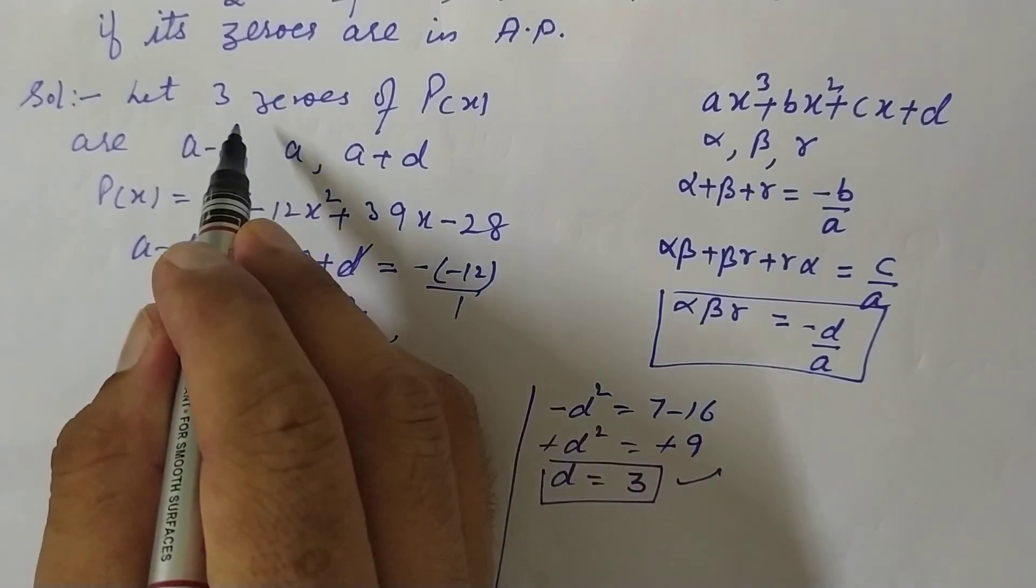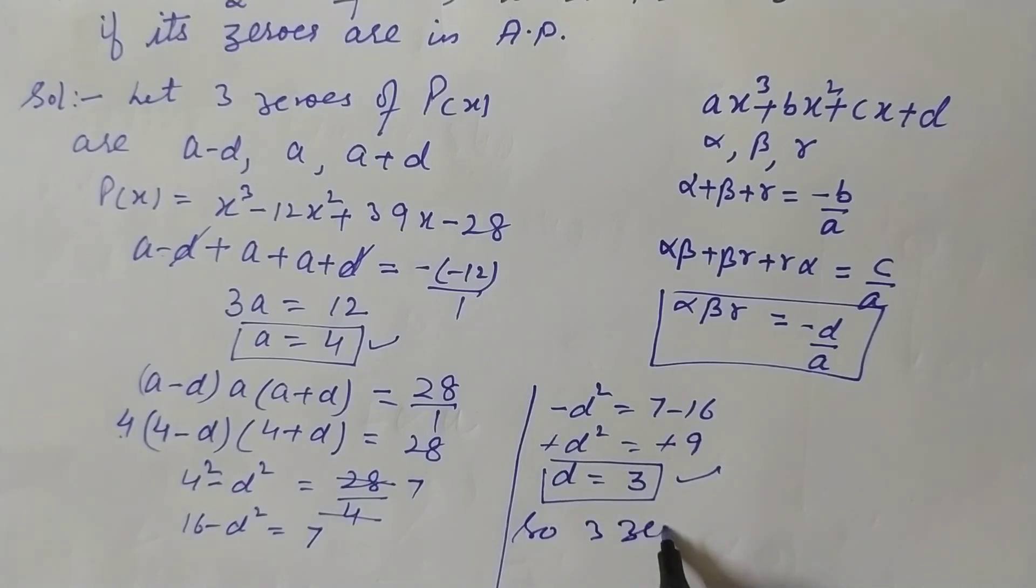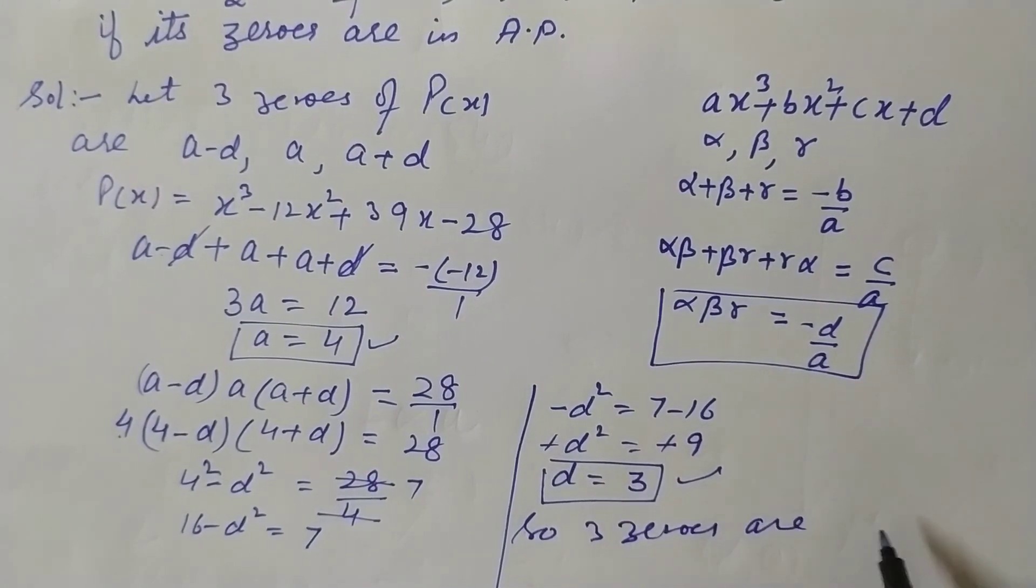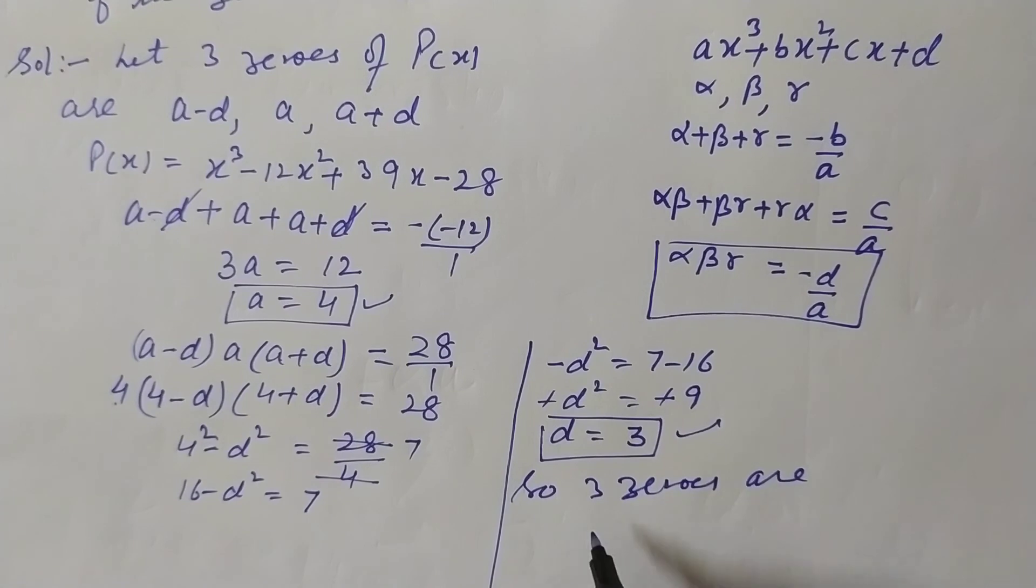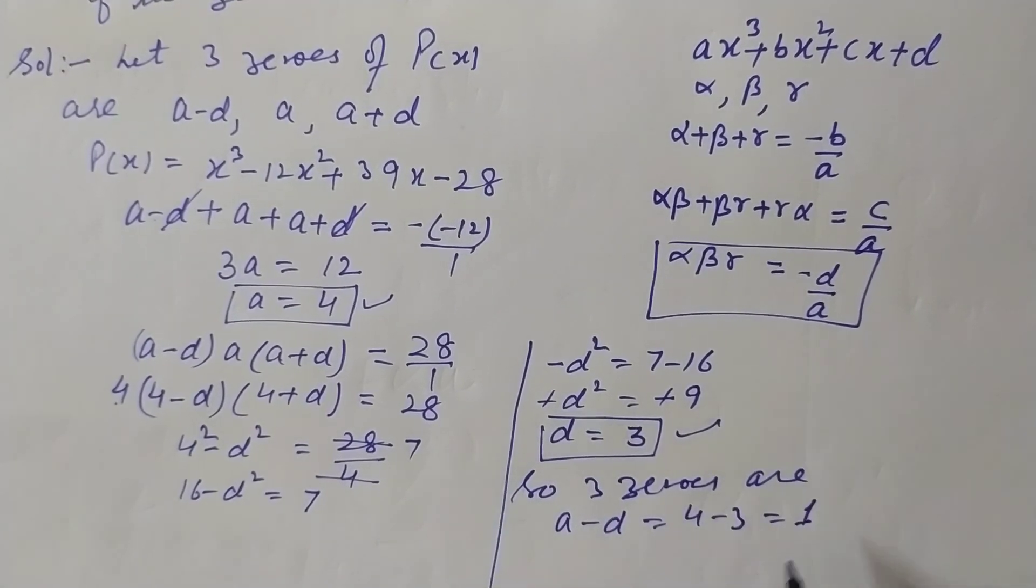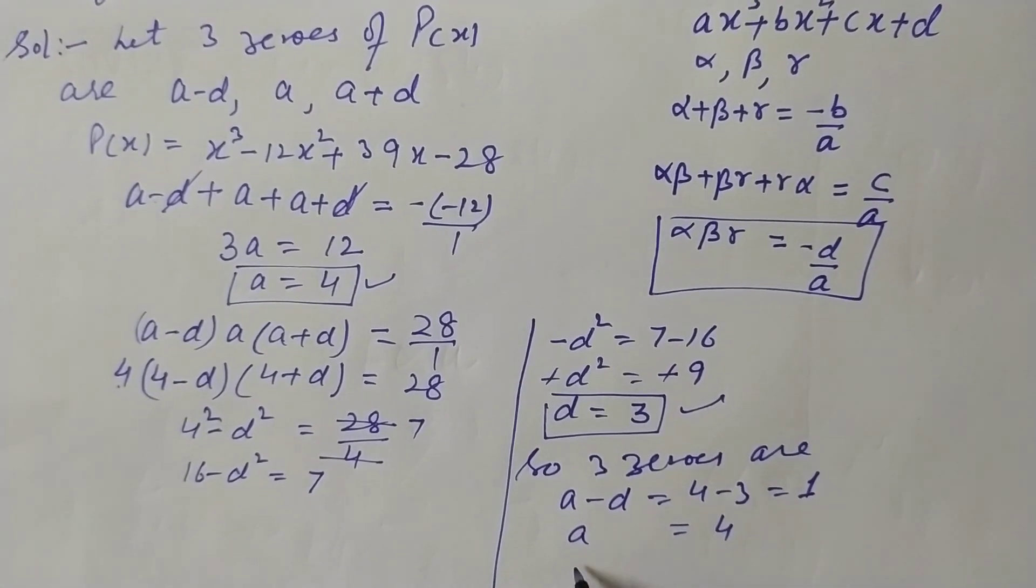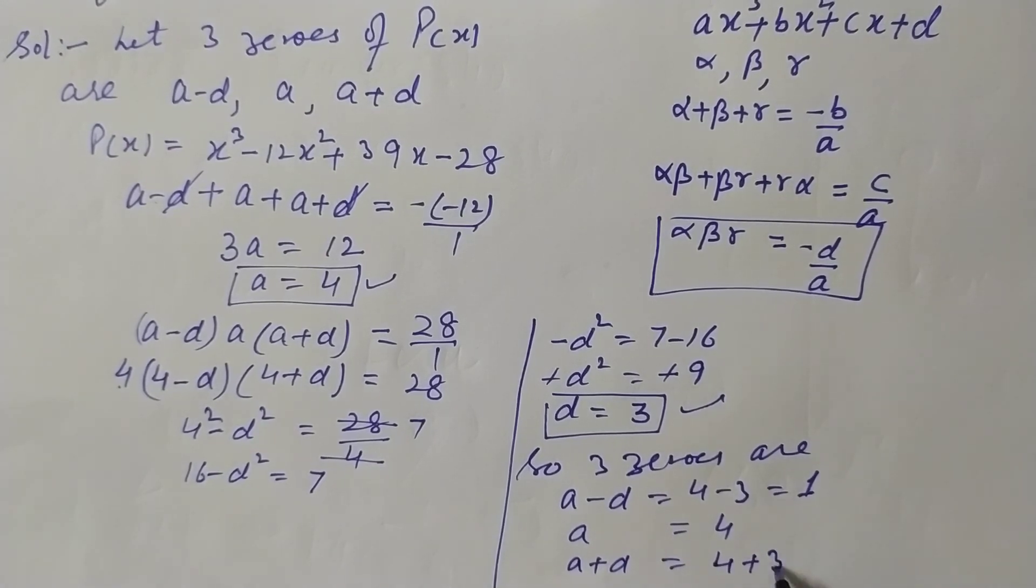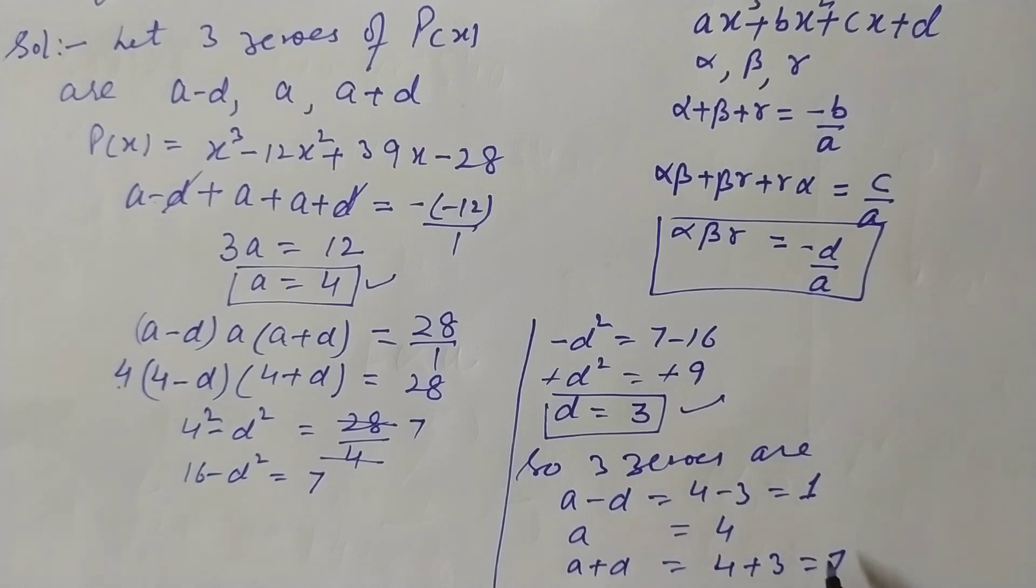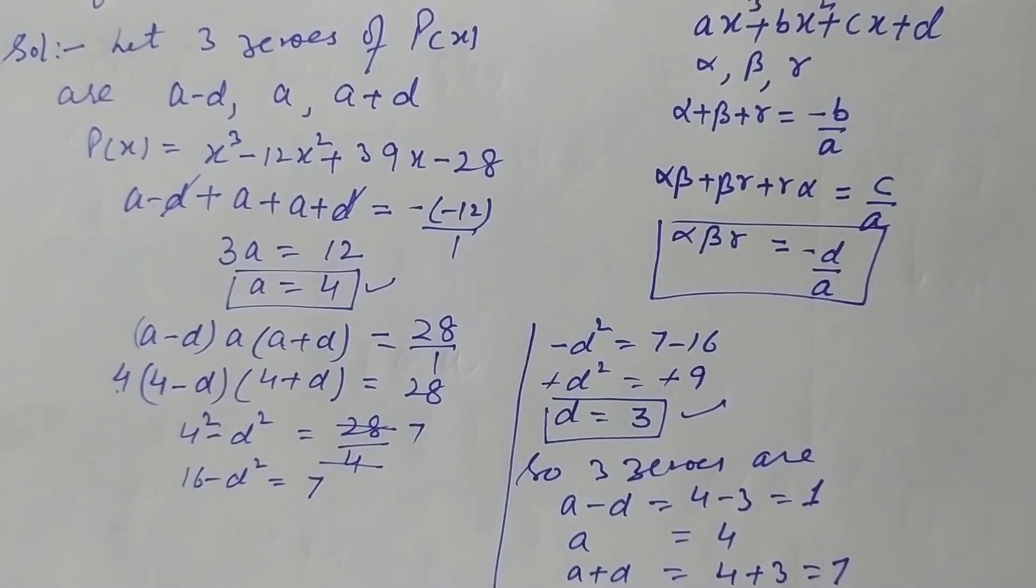So three terms will be, or three zeros will be: first one is a-d, so a is 4, d is 3, that is 1. Second zero is a, that is already 4. And the third zero is a+d, that is 4+3 = 7. So three zeros are 1, 4, and 7. These are in AP and these are the zeros of this given cubic polynomial. So this is how we solve this question. Thanks for watching.